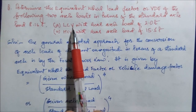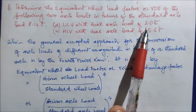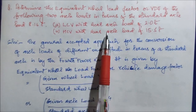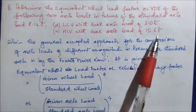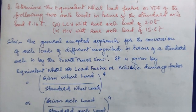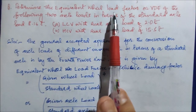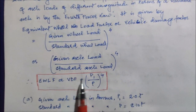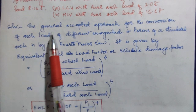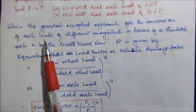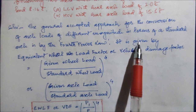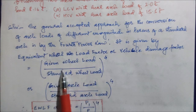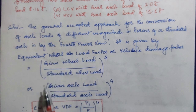Two vehicle classes are given: Class A is light commercial vehicles with a rear axle load of 2 tons, and Class B is heavy commercial vehicles with a rear axle load of 15.5 tons. For finding out the VDF or EWLF, we will use the fourth power formula. The generally accepted approach is the conversion of axle loads of different magnitudes in terms of a standard axle.